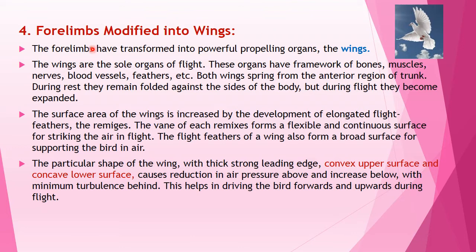The fourth morphological adaptation: the forelimbs are modified into wings. The forelimbs have transformed into powerful propelling organs called wings, which are the sole organs of flight. These organs have a framework of bones, muscles, nerves, blood vessels, and feathers. Both wings spring from the anterior region of the trunk; during rest they remain folded against the sides of the body, but during flight they become expanded. The wing surface area is increased by elongated flight feathers called remiges. The vane of each remex forms a flexible and continuous surface for striking the air in flight.